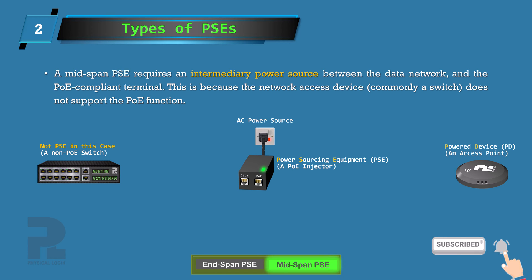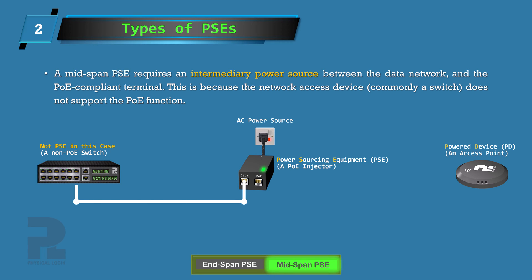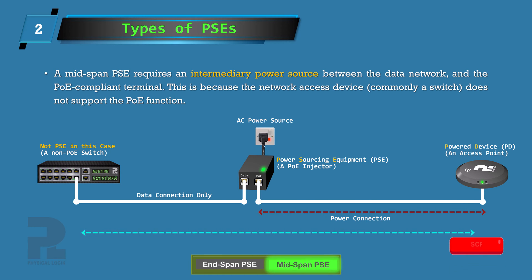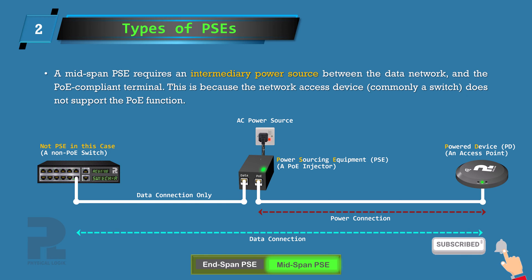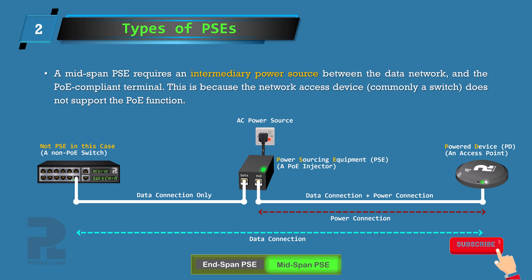The most commonly used mid-span PSE is a PoE injector, with a data port connecting to the switch and a PoE output port connecting to the PoE input port of the powered device. The injector merges the power received from the power source and the data received from the network before sending to the terminal. This method introduces some complexity and is not recommended for medium to large-scale network deployment.